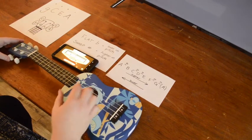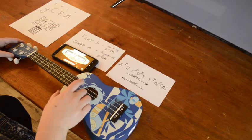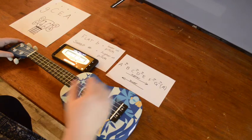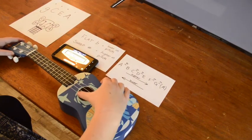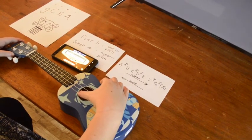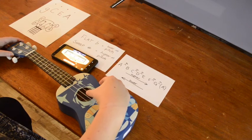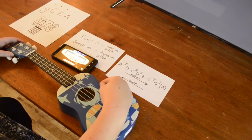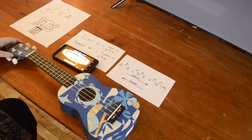There we go. So listen to what an in-tune ukulele sounds like. Listen to it again. Someday you might be able to tune by ear, but for now using a tuner is a good idea. There we go. Now you're ready to play.